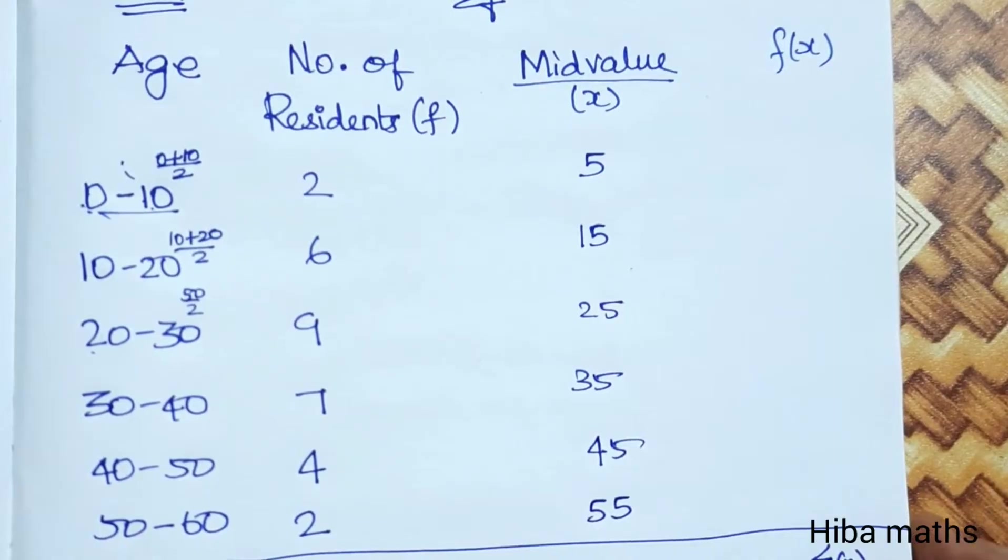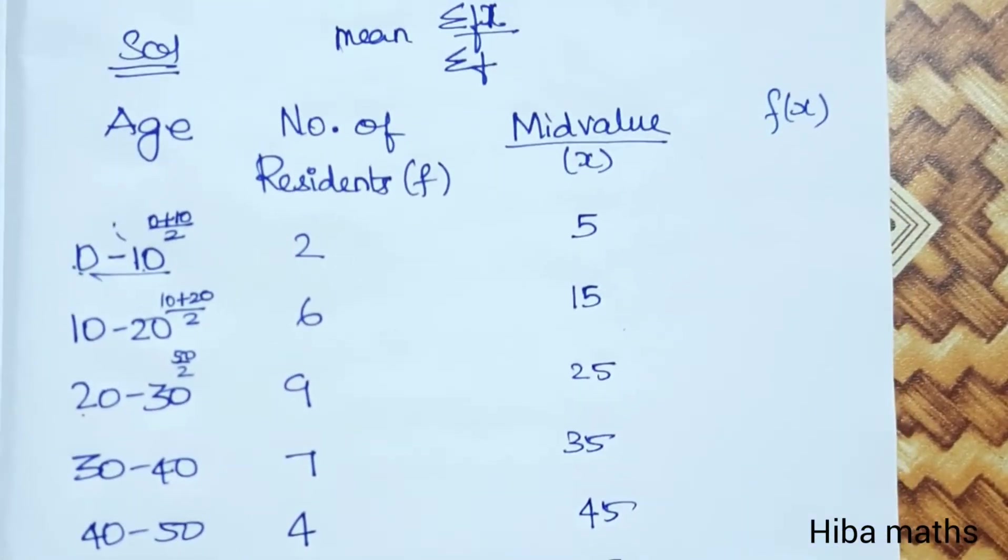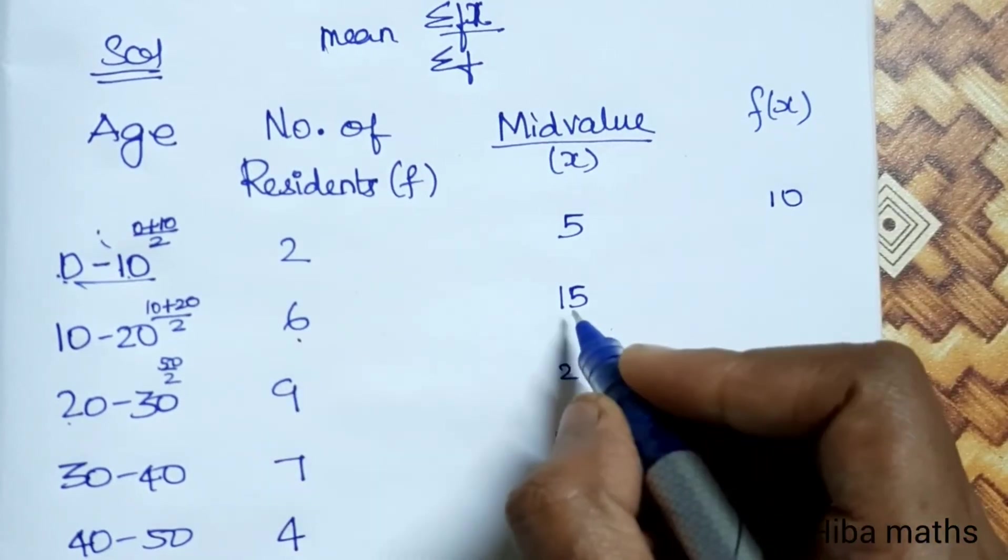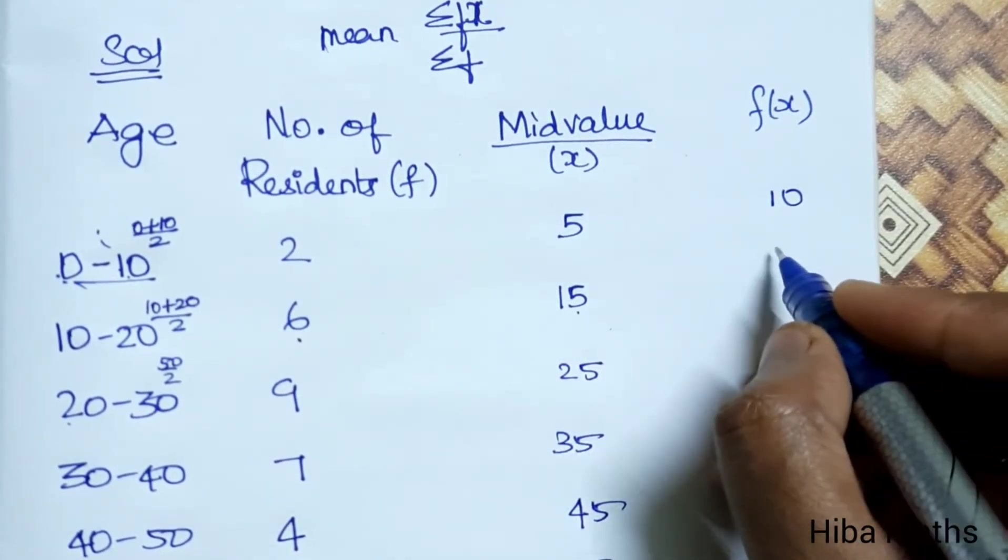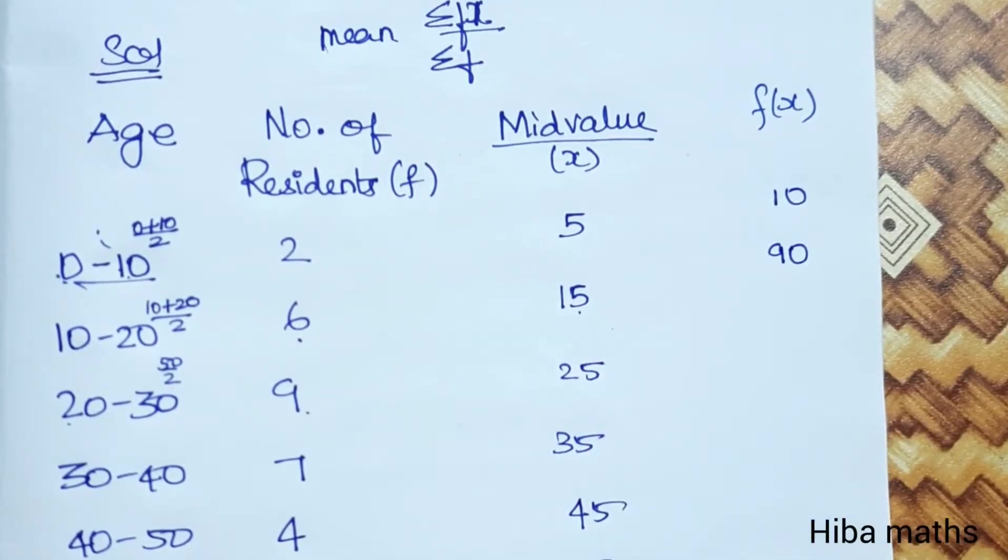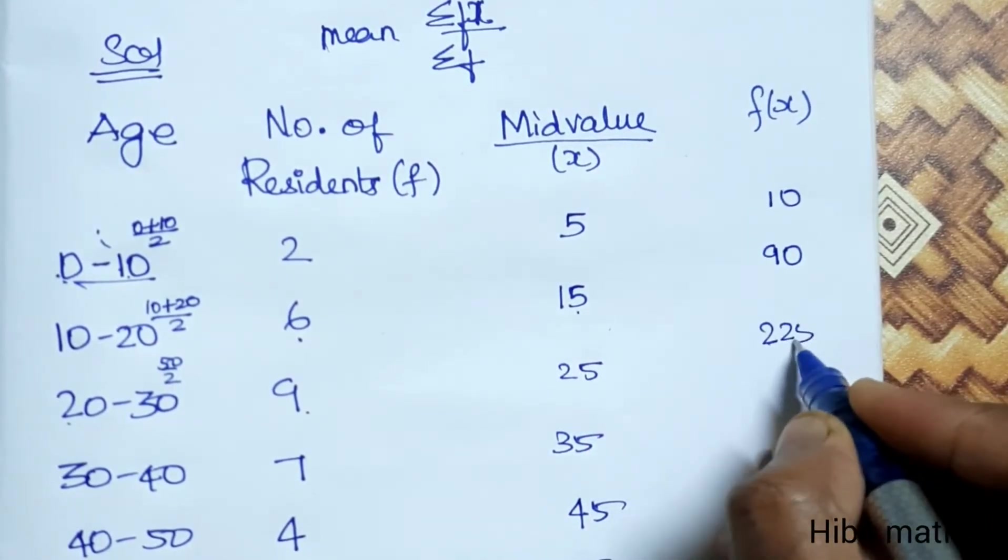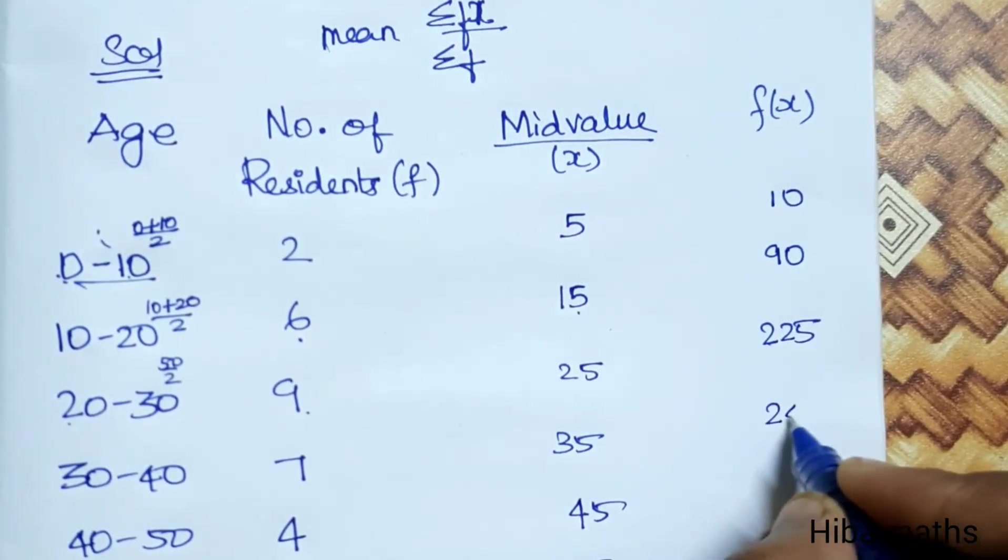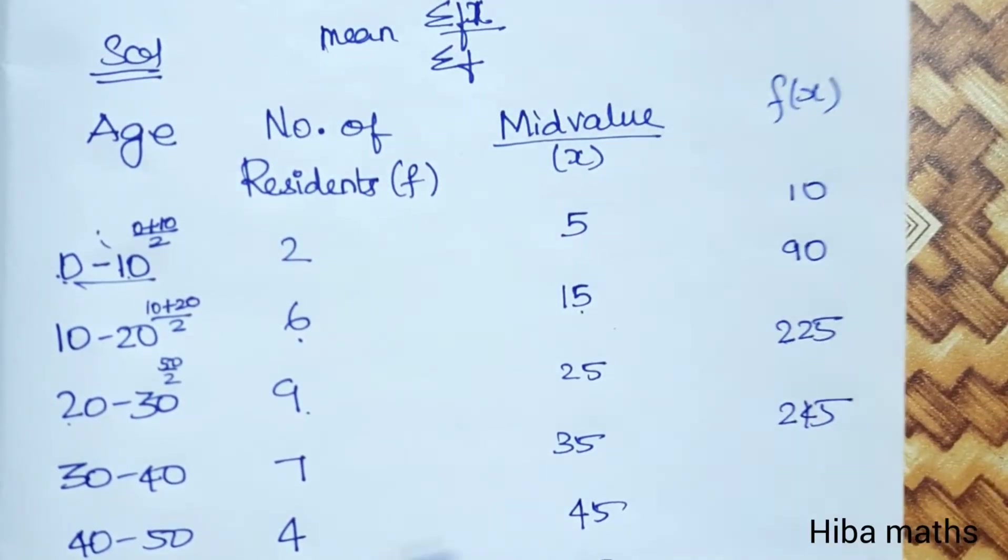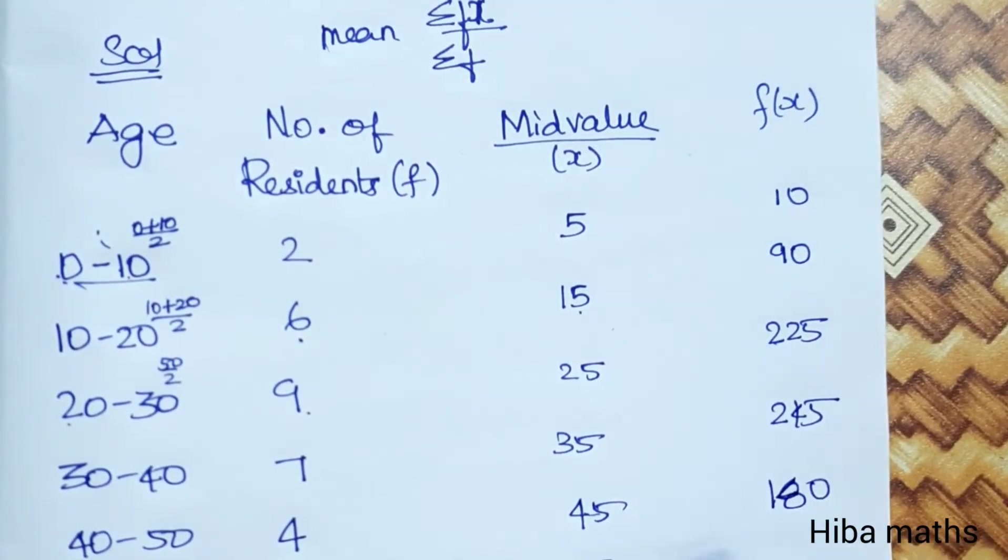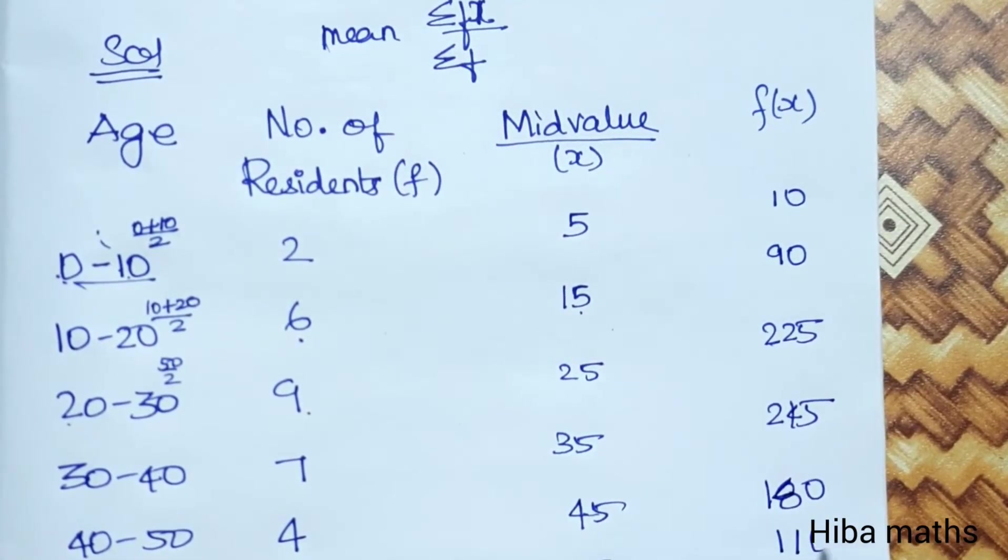Now we multiply f into x. 2 into 5 is 10. 6 into 15 is 90. 9 into 25 is 225. 7 into 35 is 245. 4 into 45 is 180. And 2 into 55 is 110.